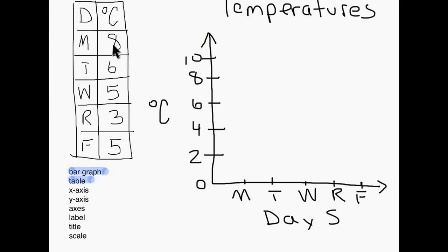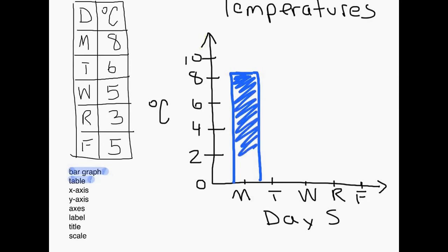The data in the table shows that on Monday it was 8 degrees, so I come up to where I see 8 and mark a line there. The bar for Monday needs to go up to 8, and then I color it in. Looking at Tuesday, we can see that Tuesday was 6 degrees. So I come in, go up to the 6, make a bar, and color it in.